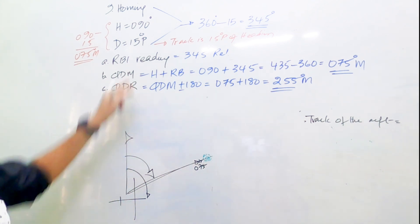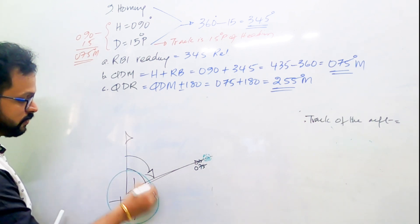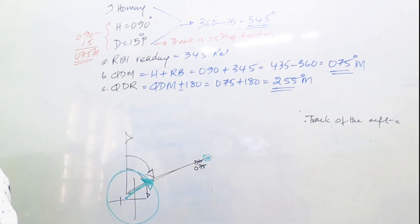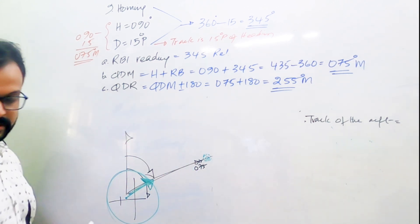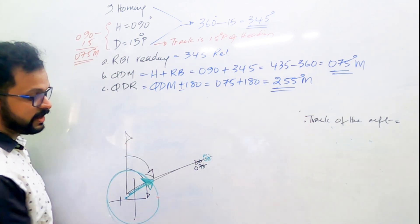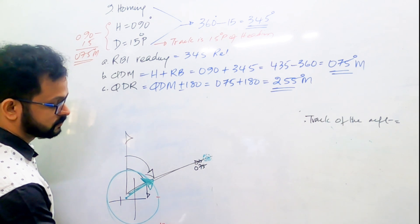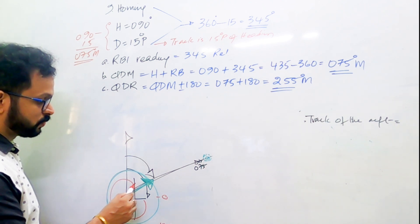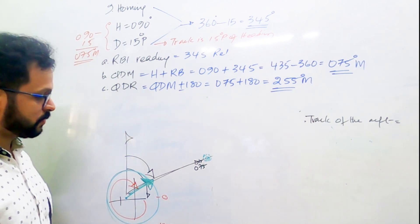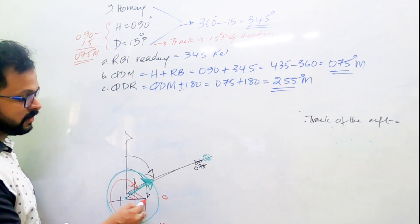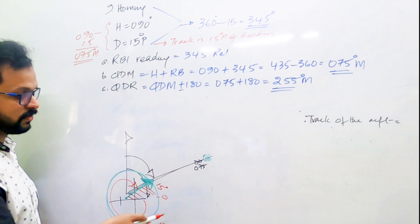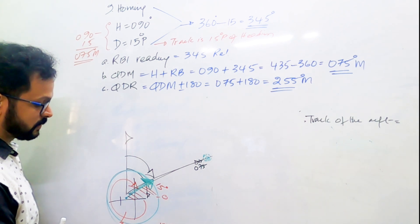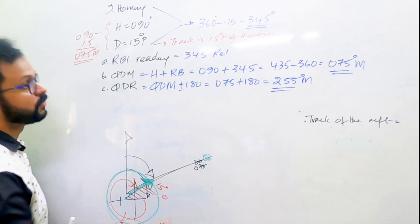To understand the RBI indication, draw a circle around the aircraft. The ADF needle always points towards the tuned NDB. For an RBI, the head is always at zero, and relative bearing is measured clockwise from the nose of the aircraft to the NDB. The angle between the heading and the track is the drift of 15 degrees, so the relative bearing is 360 minus 15.